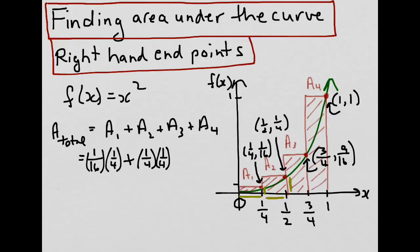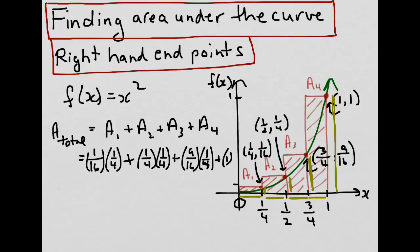For rectangle 3, the area would be 9 sixteenths times one quarter. And finally for rectangle 4, the area would be 1 times one quarter.